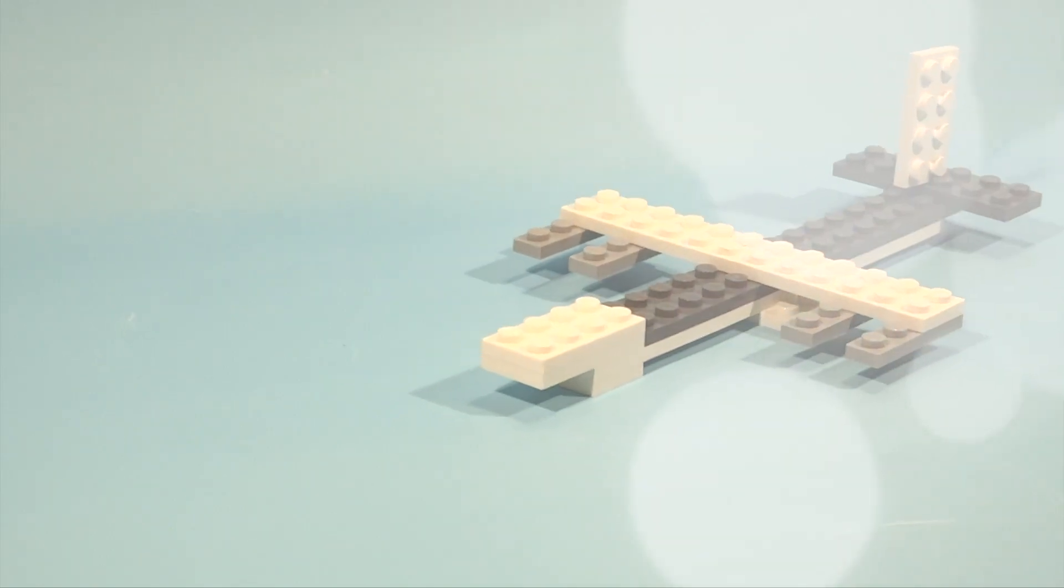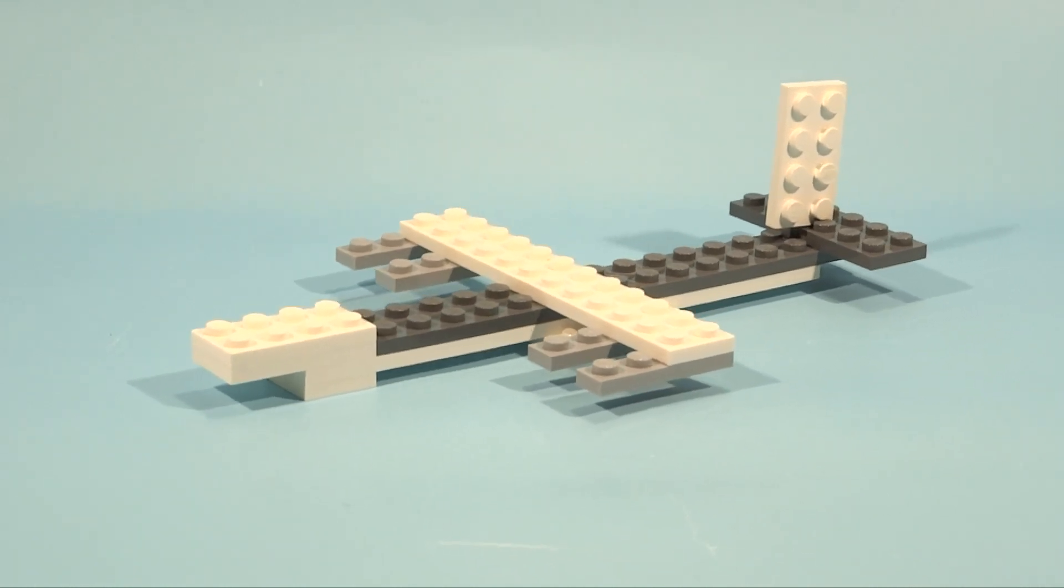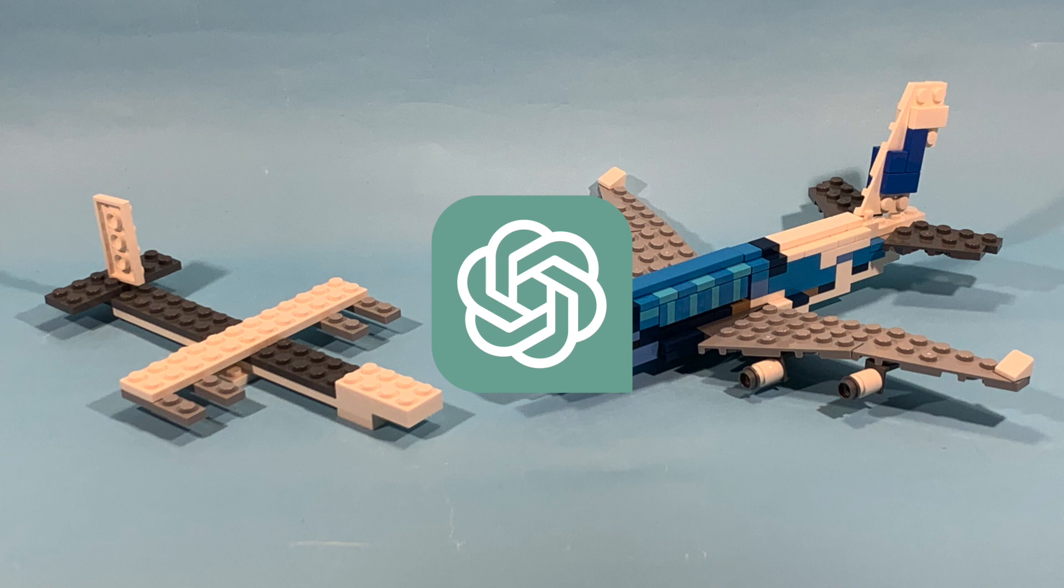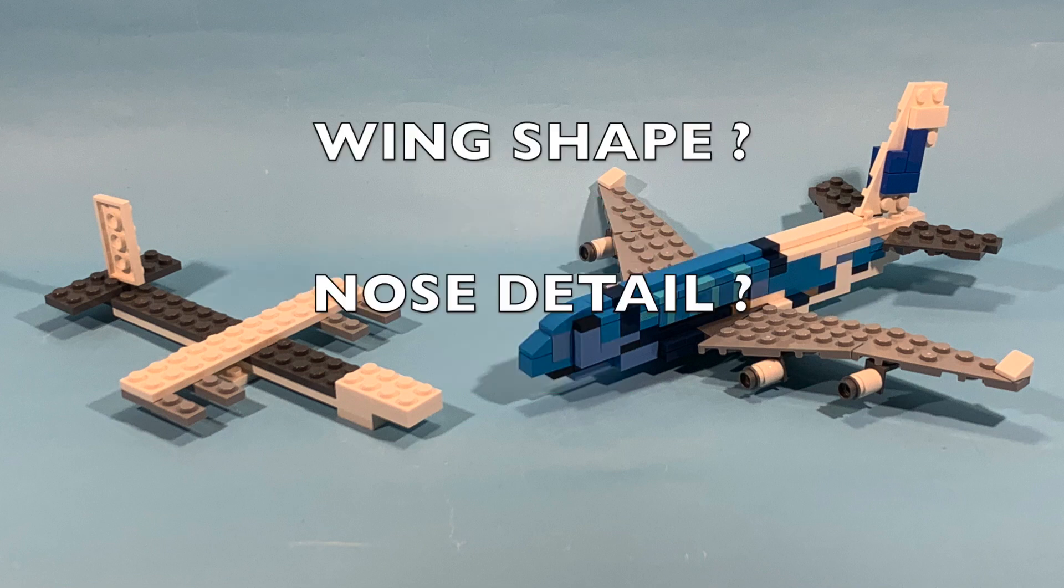This model is very simplistic. When I put my model next to it, we can clearly see the difference. Even for kids, the ChatGPT model isn't accurate at all. A lot of details are missing, and the shape of the plane isn't great.